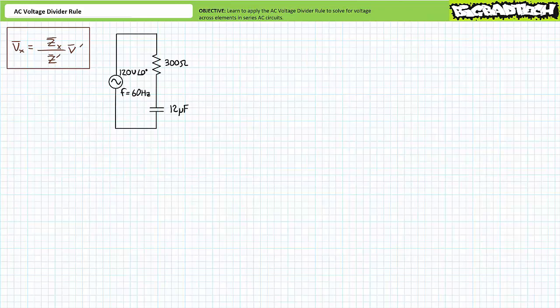As an illustrated example of the AC voltage divider rule, consider the following series AC circuit comprised of two elements. The first element is a 300 ohm resistor and the second element is a 12 microfarad capacitor. The source has an effective value of 120 volts and an excitation frequency of 60 hertz. We're being asked to solve for the voltage drop across each element — not for current, nor for total impedance.